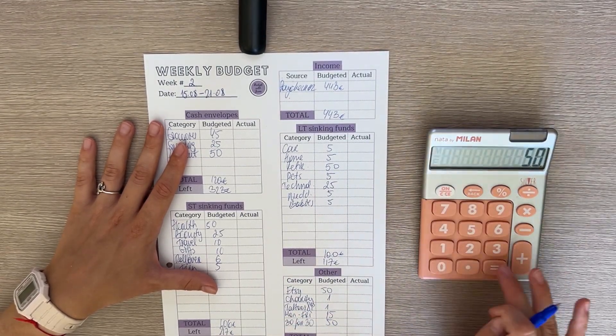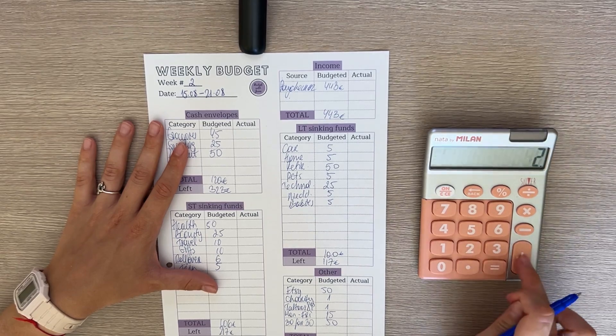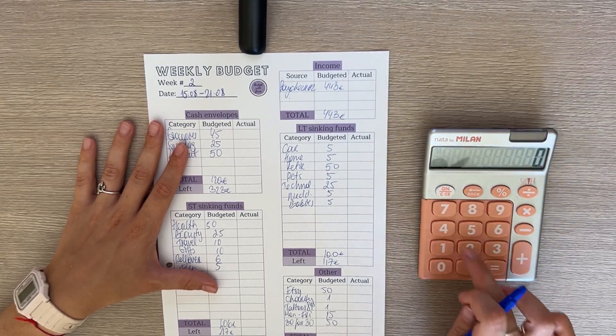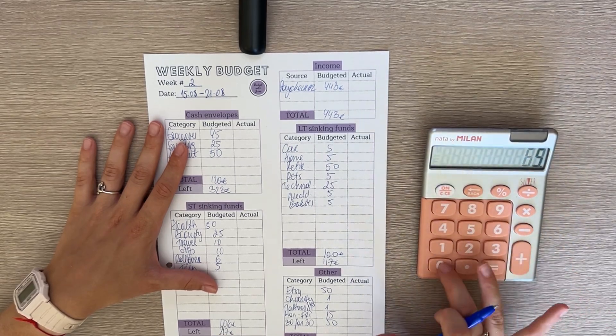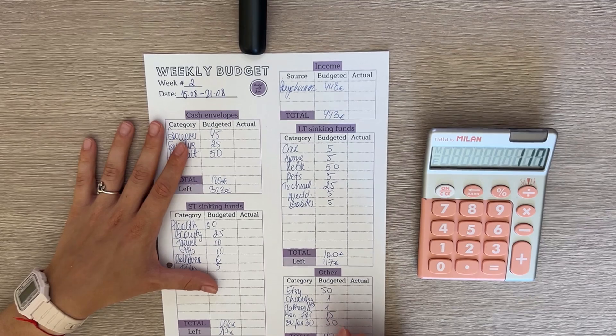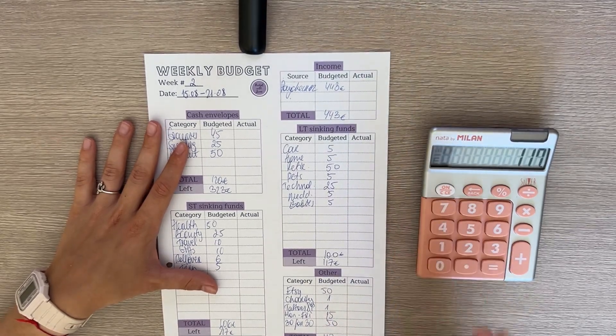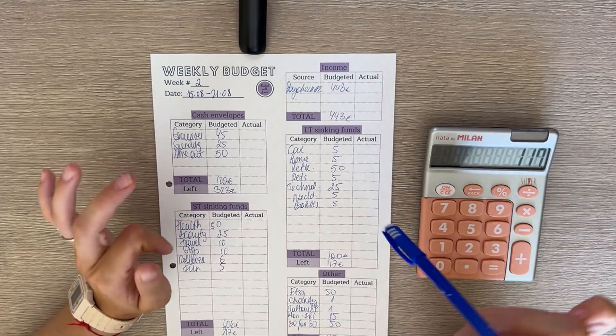So in total, if we didn't mess up, this should be 117, which, yes indeed, 117 euros, which means we have zero euros left to budget. That means each euro of our paycheck has a place to go into our budget.